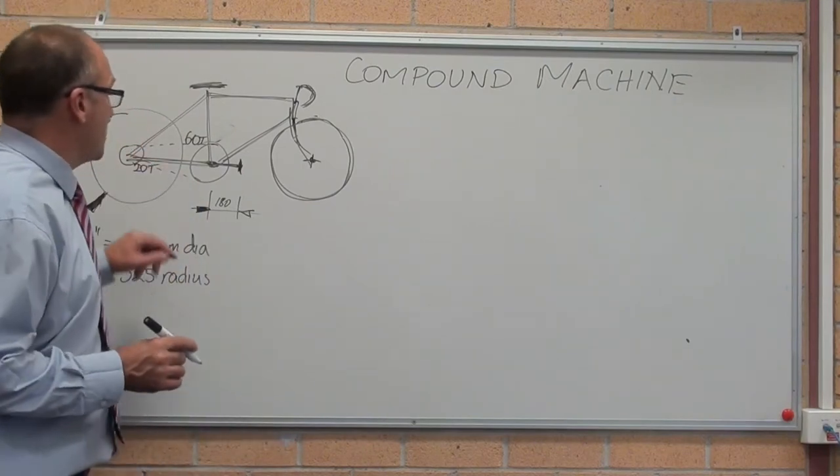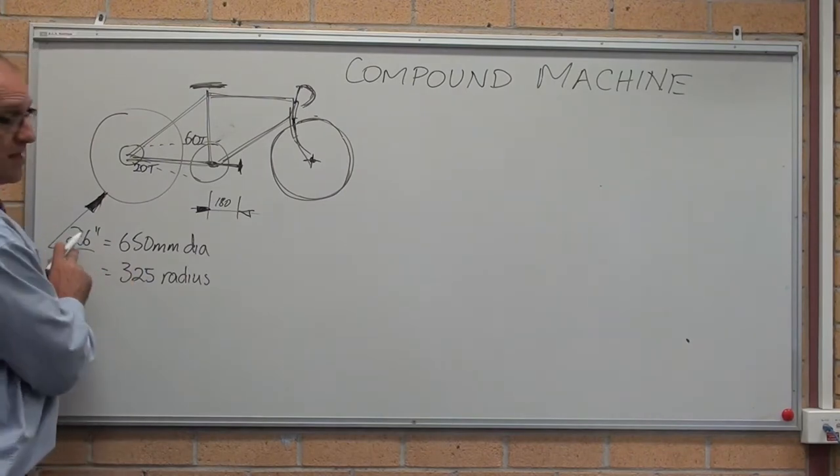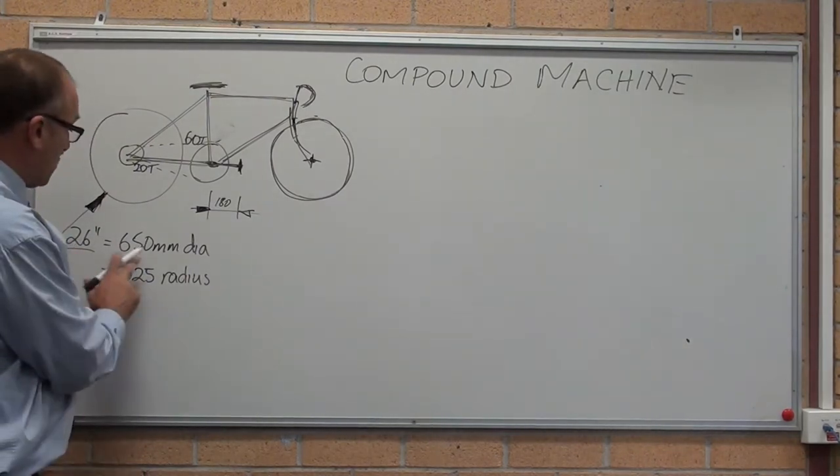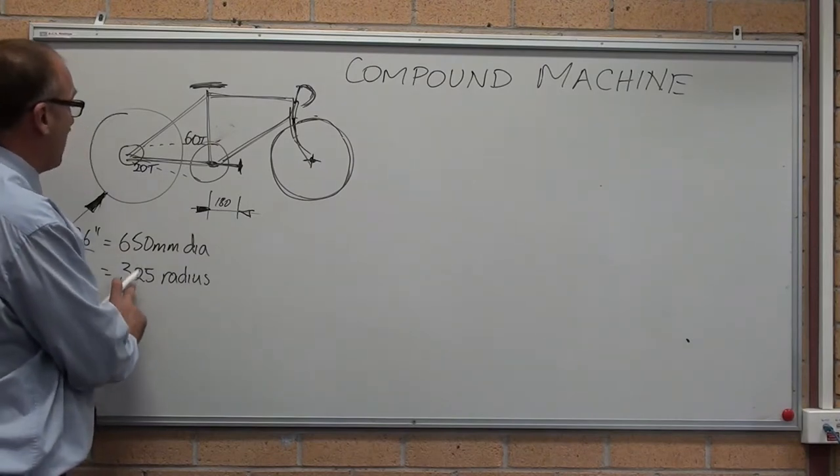Your second compound machine was this bike. 180mm was the crank pedal, 26 inch wheel, which equates to 650mm diameter, 325mm radius on the back wheel.